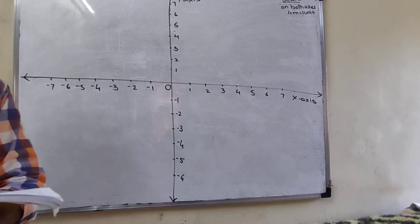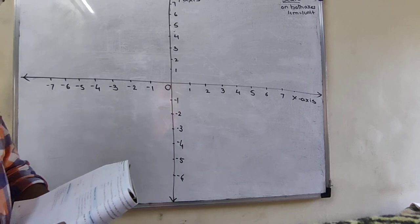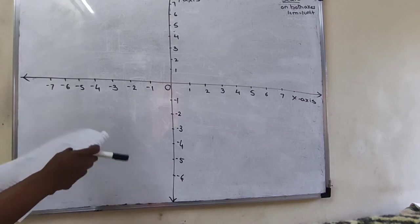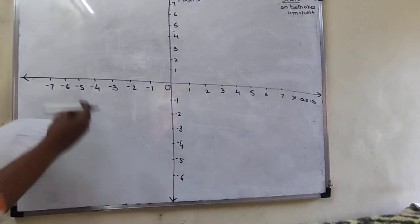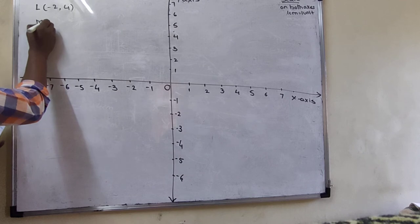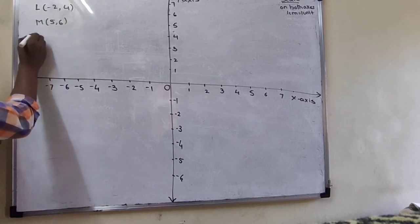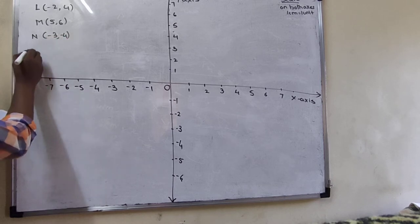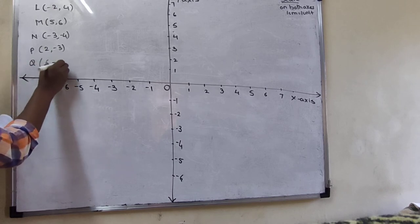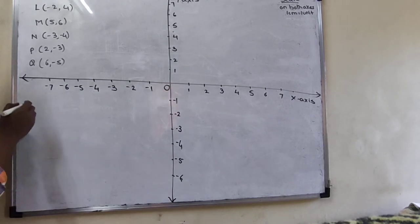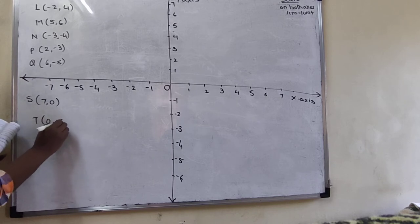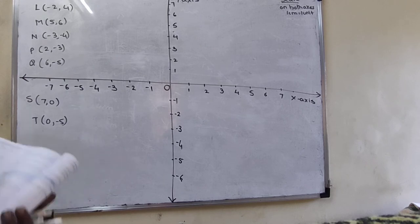Now we'll plot the points. Question number three says: draw the coordinate system on the plane and plot the following points. The points given are: L(-2, 4), M(5, 6), N(-3, -4), P(2, -3), Q(6, -5), S(7, 0), and T(0, -5). You have to write these numbers on the right-hand side of your graph book.